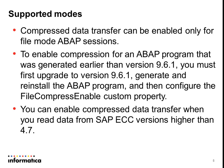To enable compression for an ABAP program generated earlier than version 9.6.1, you must first upgrade to version 9.6.1, generate and reinstall the ABAP program, and then configure the custom property. Also, this compression algorithm is only supported from SAP ECC versions higher than 4.7, so please check your SAP version before enabling this property at the Power Center side.